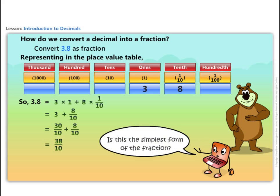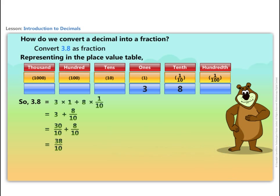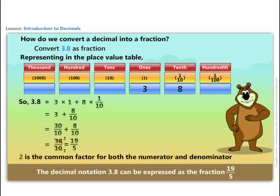Is this the simplest form of the fraction? Two is the common factor for both the numerator and denominator. So dividing by two, we get the fraction in its simplest form, which is 19 by 5.